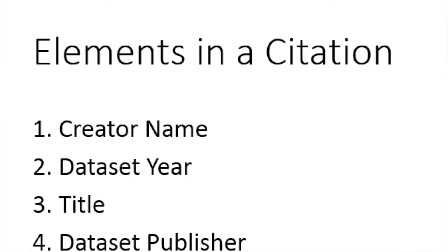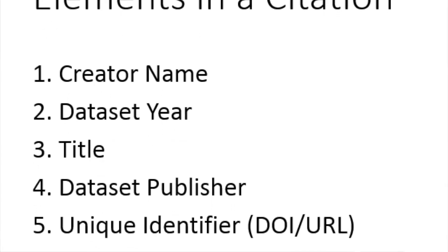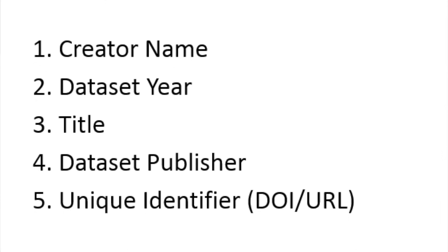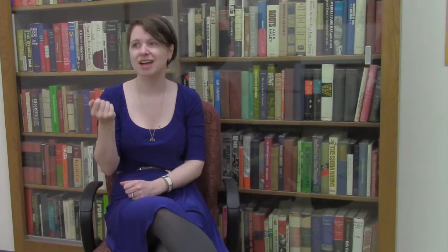Whenever you find a research data set that you would like to use, you want to cite it. There are five key elements of a data set citation, which have been standardized fairly recently because data sharing is a fairly new phenomenon. The first is the name of the creator or creators. The second is the year the data set was published. Number three is the title of the data set. Number four is the data set publisher or the repository where the data set lives. And number five is a unique identifier for the data set — ideally a DOI, a digital object identifier, but a URL is also pretty good.